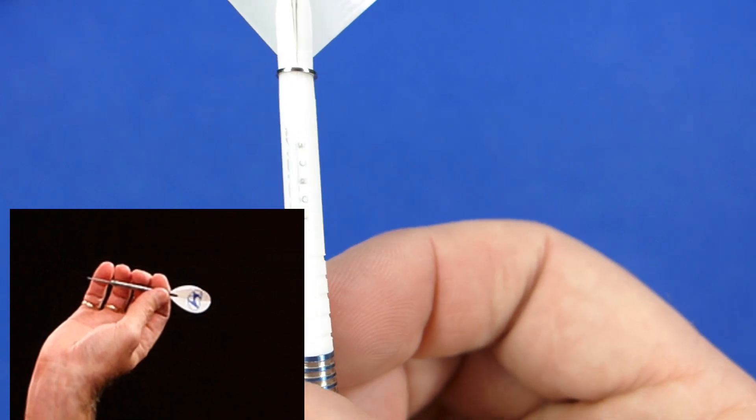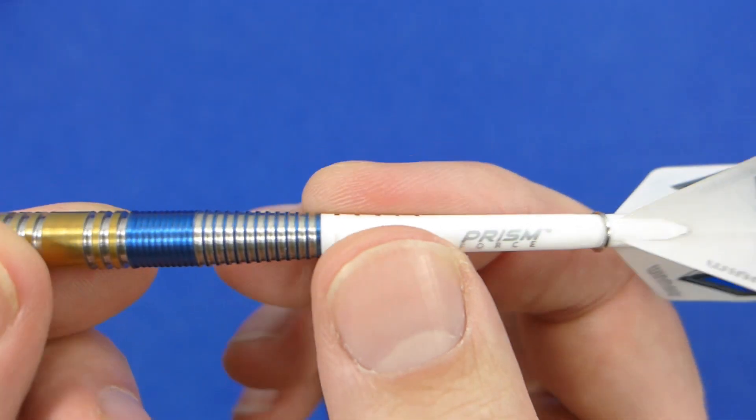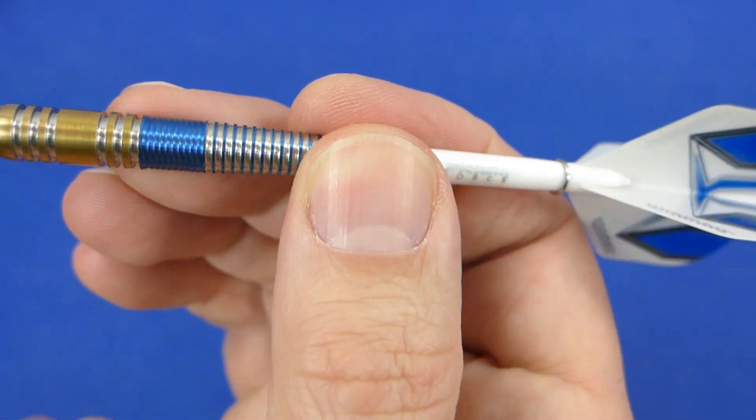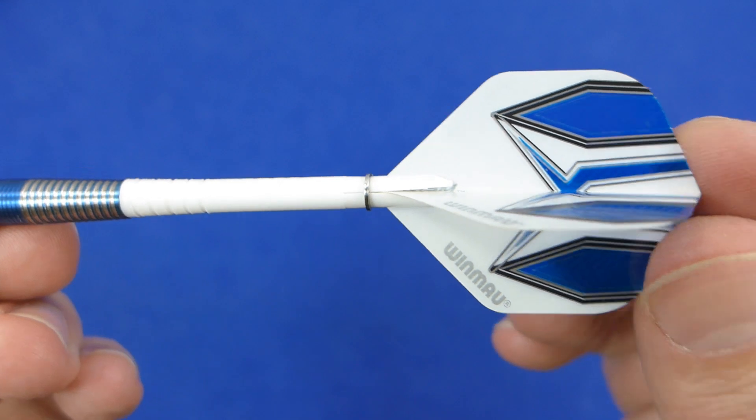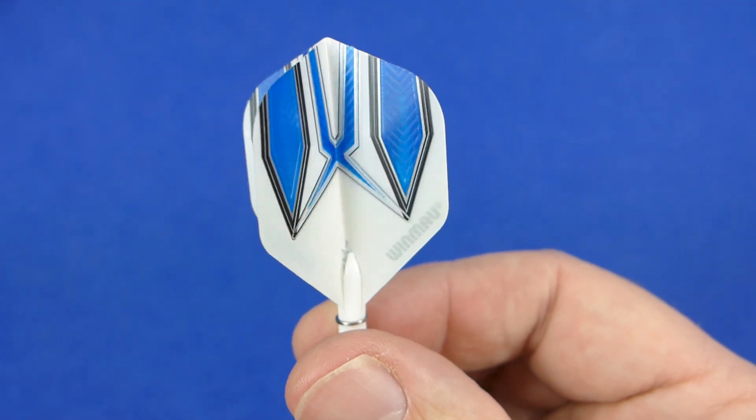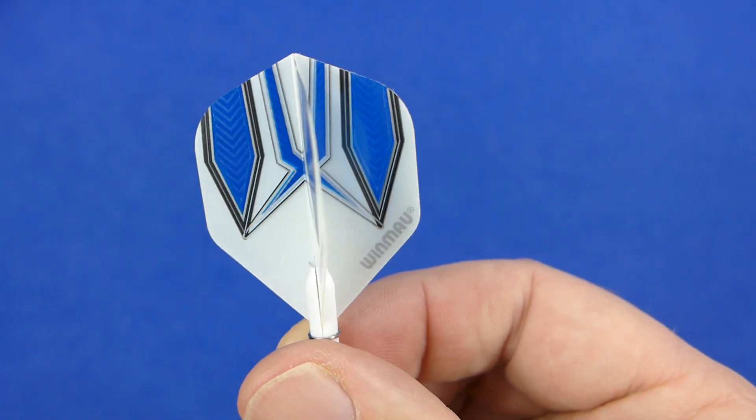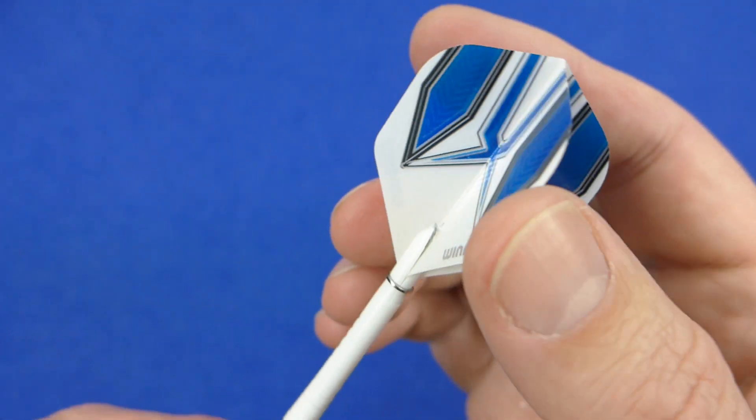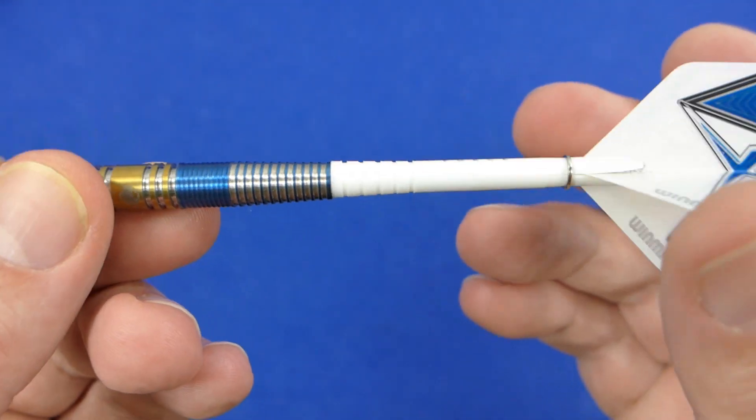And the nice thing with these Prism Force stems is they've got some grooves on the bottom. So if you like to grip the stem, quite a good stem for that. And there's the Prism Alpha standard shape flight. Slightly transparent on the blue sections. Nice design on the flight.